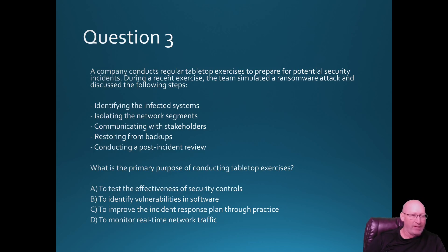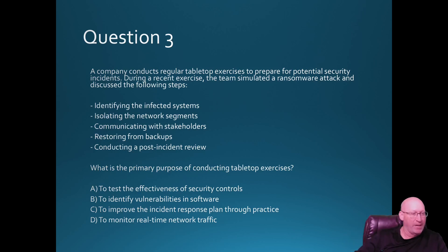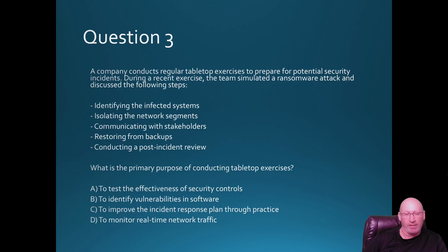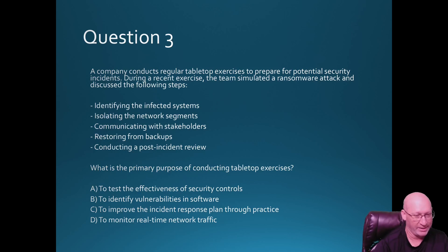That means option C — to improve the incident response plan through practice — makes the most sense. We're identifying how the process would go on paper. CompTIA might try to throw you off with the word 'practice' since you're not physically doing anything, but we're still practicing the process conceptually. Answer is C.